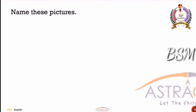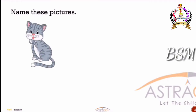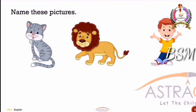Can you see these pictures? Name these pictures. This is a cat — meow meow. And this is a lion. Lion is the king of the jungle. And who is there? He is a boy. He is my brother. So, by seeing the pictures, we are able to name them — a cat, a lion, and a boy. We need to remember some words also, just like these pictures, and read them quickly.